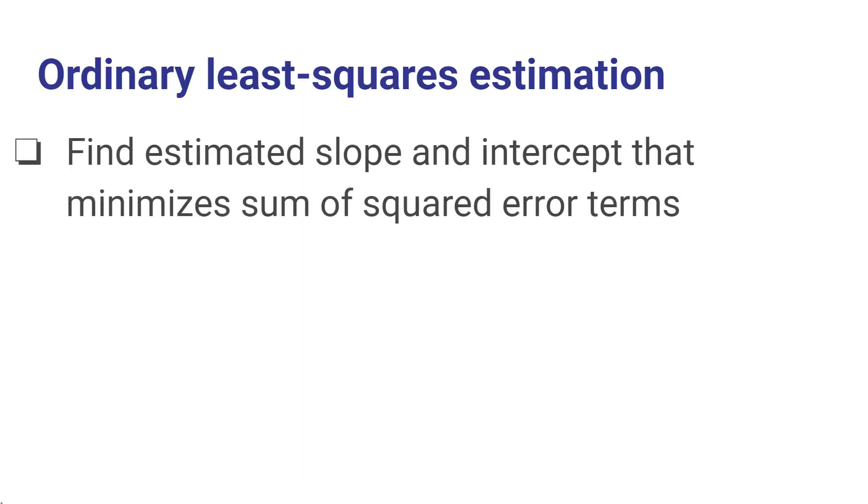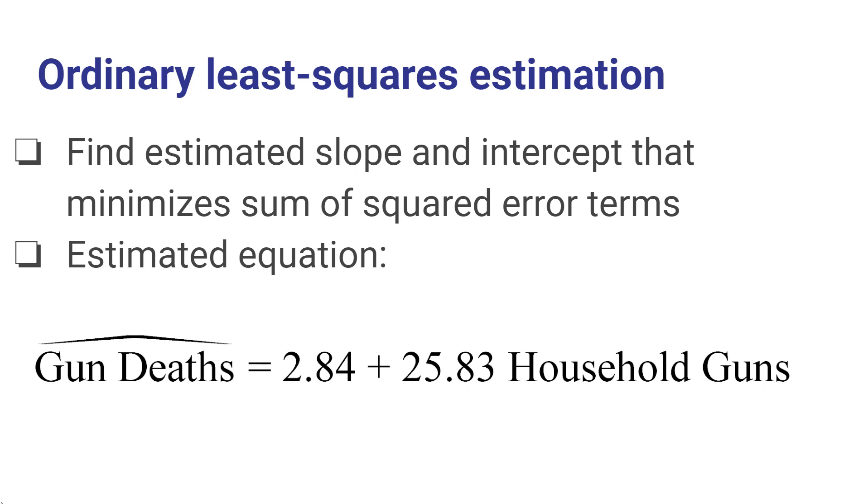When we find the estimated slope and intercept that minimizes the sum of squared error terms, we end up with an estimated equation that's given by gun deaths equals 2.84 plus 25.83 times the proportion of households that own guns. The most interesting term for our purposes here is that slope coefficient, the 25.83. What this is telling us is that if 1% more of the population owned guns in a given state, the number of deaths per 100,000 people would increase by 25.83. And similarly, a 10% increase in household gun ownership would result in 258.3 additional deaths per 100,000 people in the state.